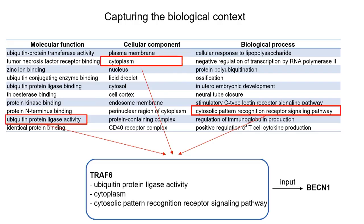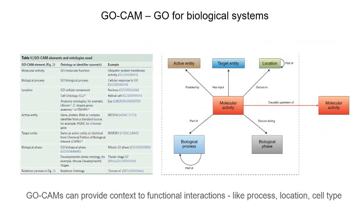The problem is that there is no link between these annotations. It would be good to capture the biological context. For instance, if you curate a paper, you would like to be able to say that TRAF6 is a ubiquitin protein ligase that acts in the cytoplasm and is part of the cytosolic pattern recognition signaling pathway, and it acts on Beclin-1.